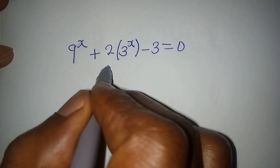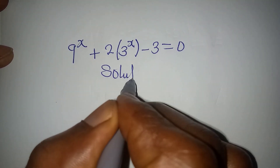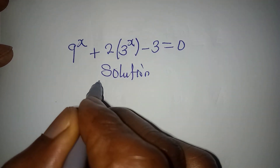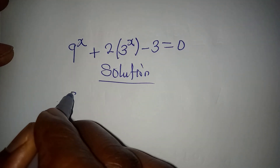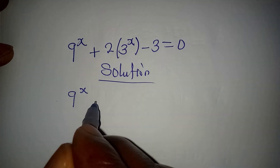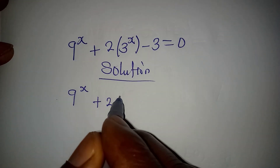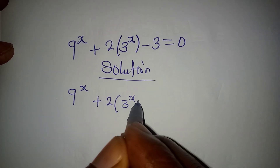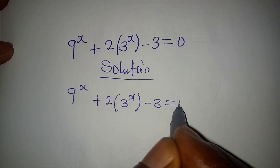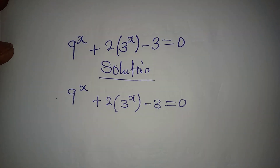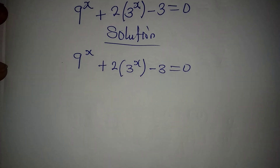Hello everyone, let's provide a solution to this problem. We have 9 to the power of x plus 2 multiplied by 3 to the power of x minus 3, to be equal to 0. Just hold on and see how we solve this.